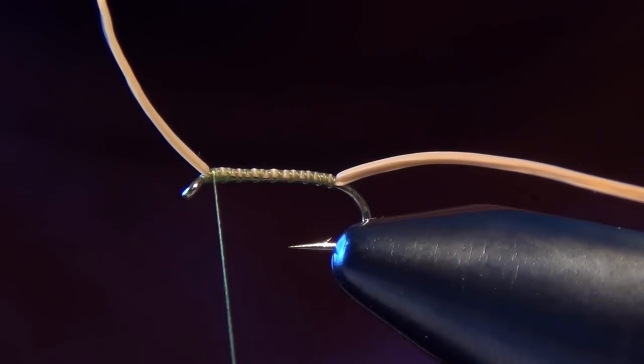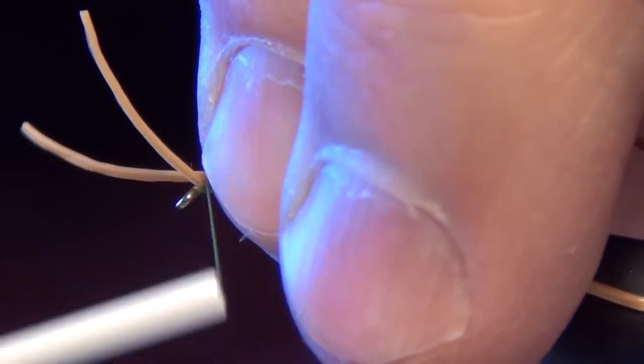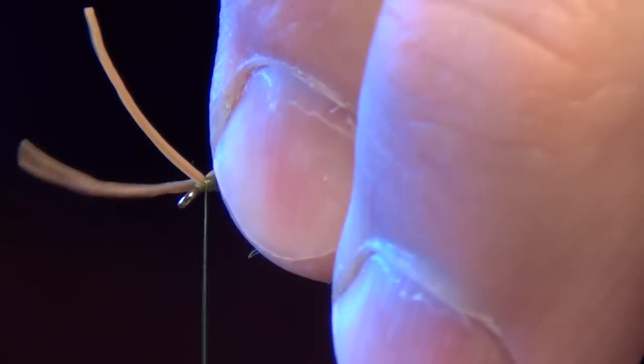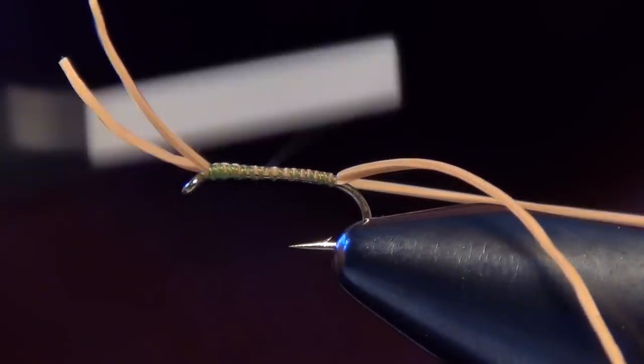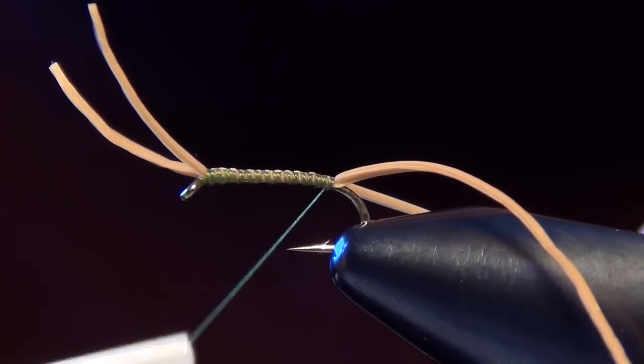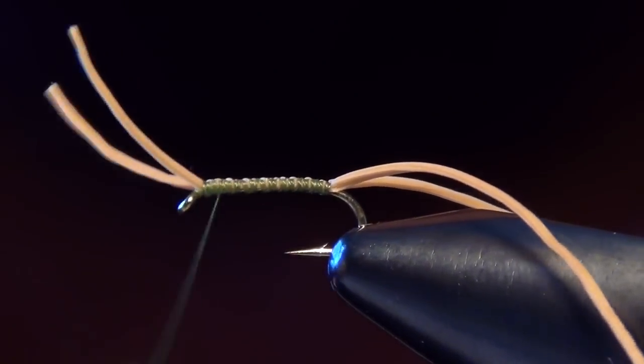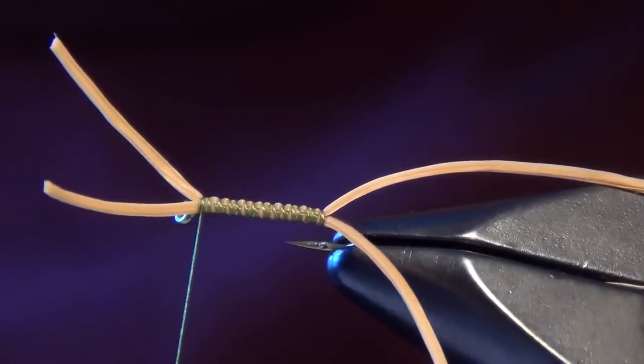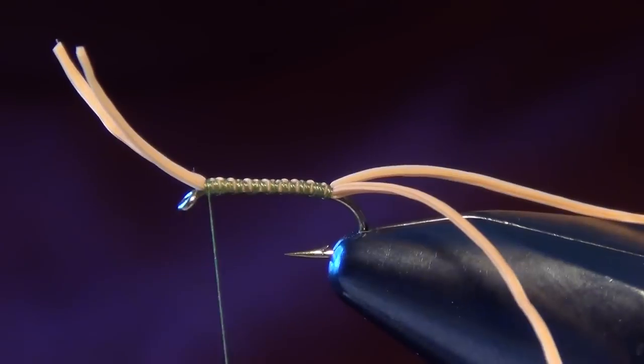I'll spiral my thread forward and I'm going to do the same exact thing with another piece here on the other side. What you should end up with is two antennae and two tails. I like to tie it in so that the curve of the material naturally goes with the fly, curves up or out away from the fly.